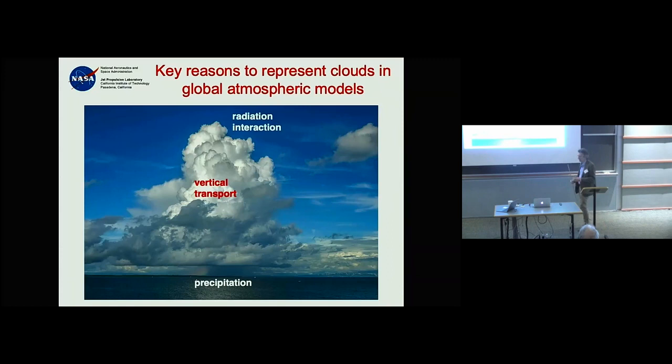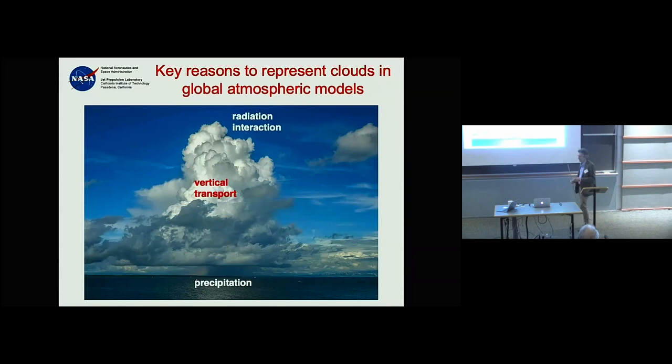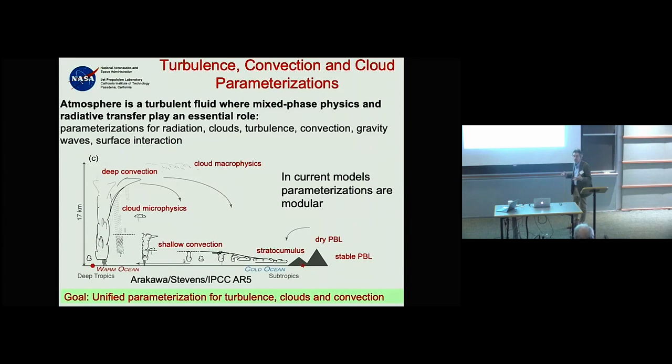The atmosphere is a fluid in turbulent flow, but it has mixed-phase physics and interaction with radiation. That demands we be able to parameterize and represent in these large-scale models — which have big grid boxes — things like radiation shortwave and longwave, turbulence, convection, gravity waves, and surface interactions.